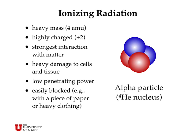There are three main types of ionizing radiation that come from unstable isotopes like this. The first is an alpha particle. An alpha particle is a helium-4 nucleus, and it consists of two neutrons and two protons.